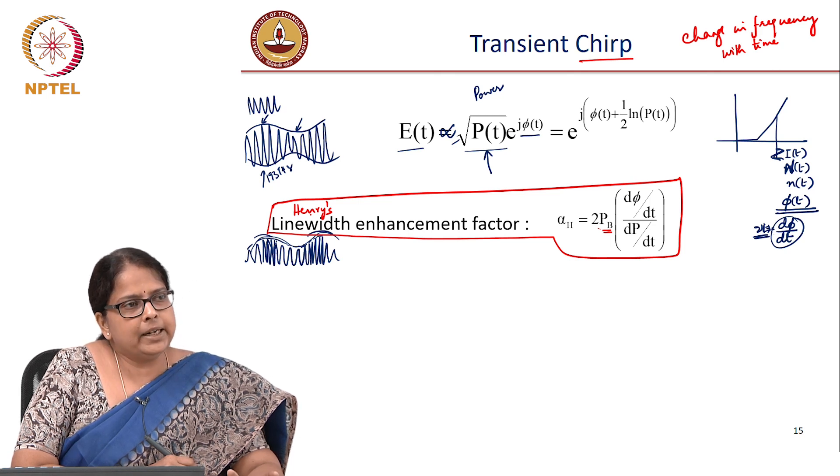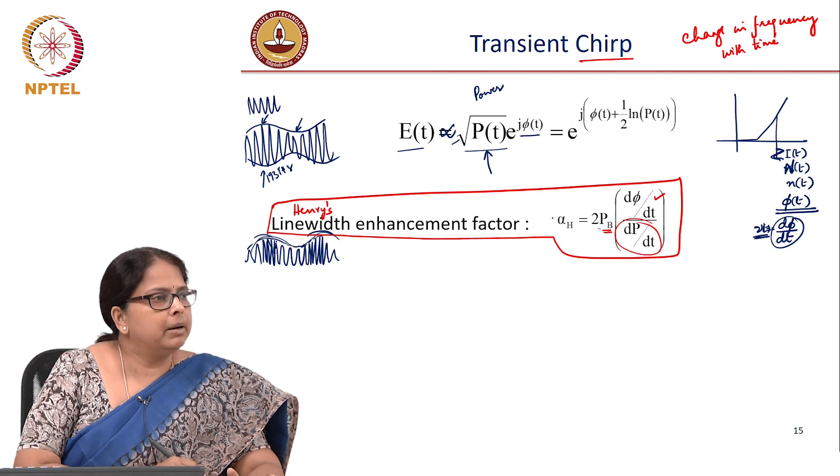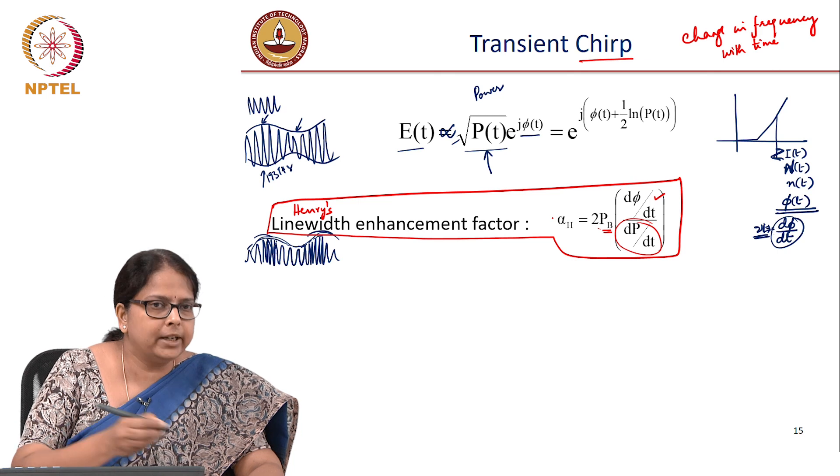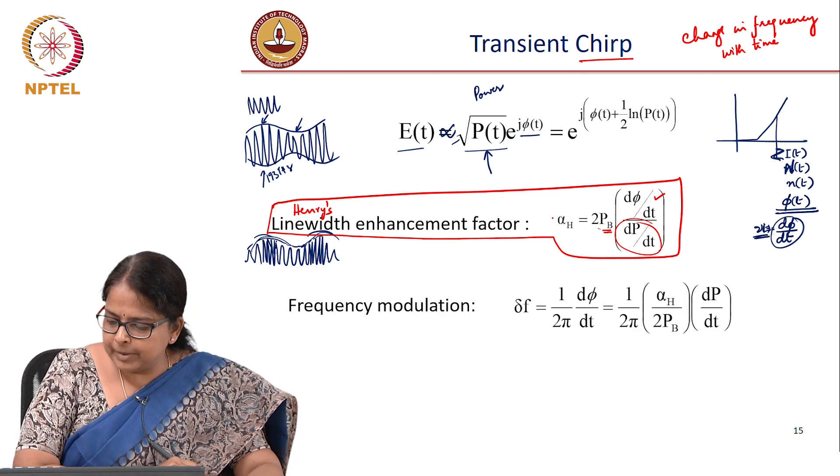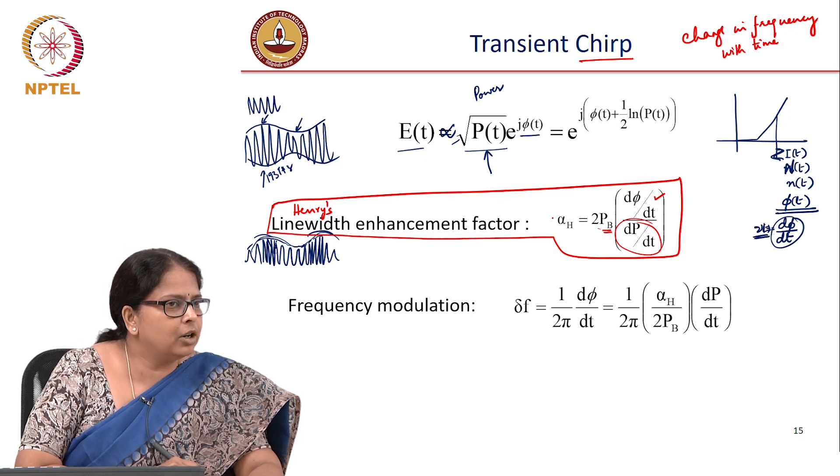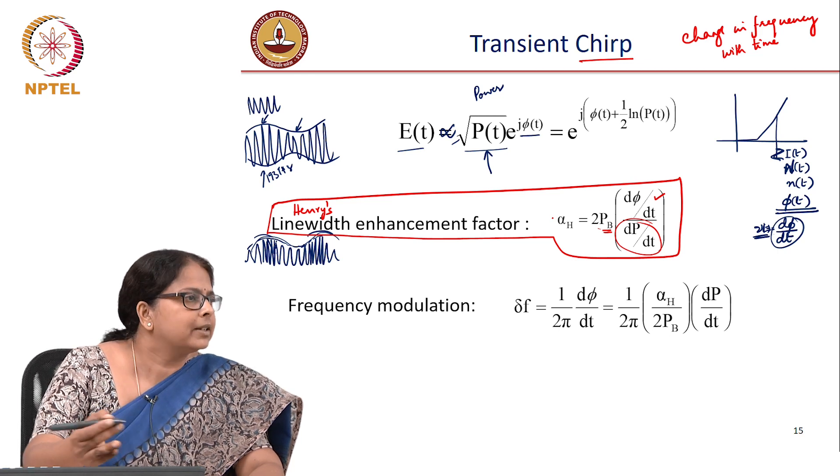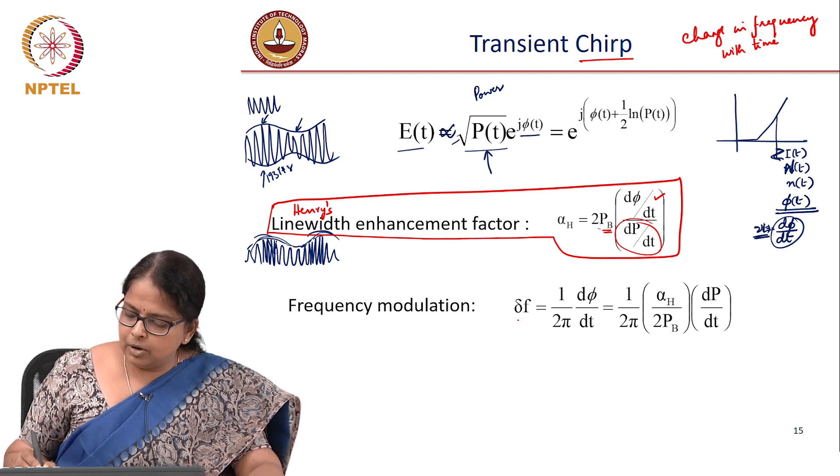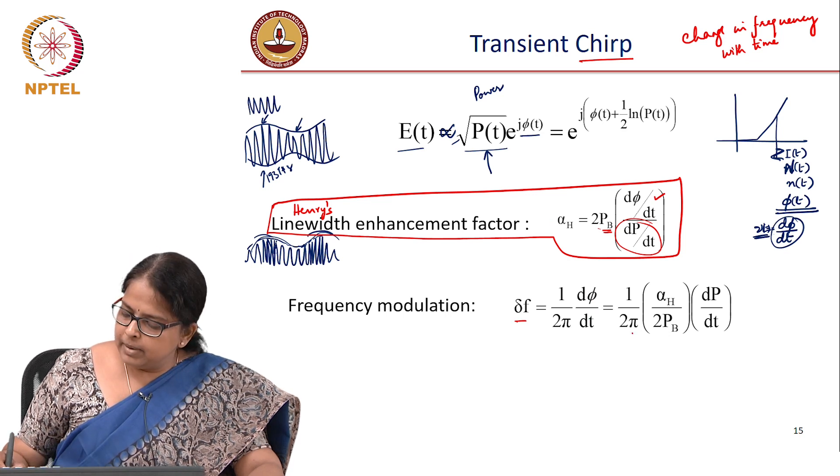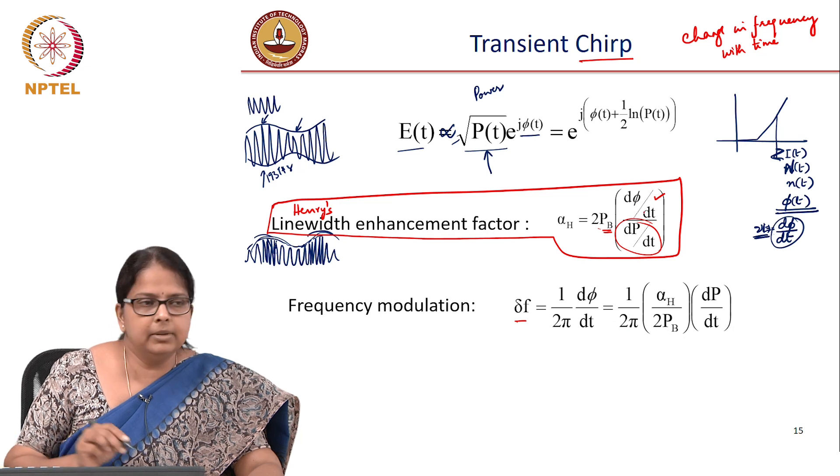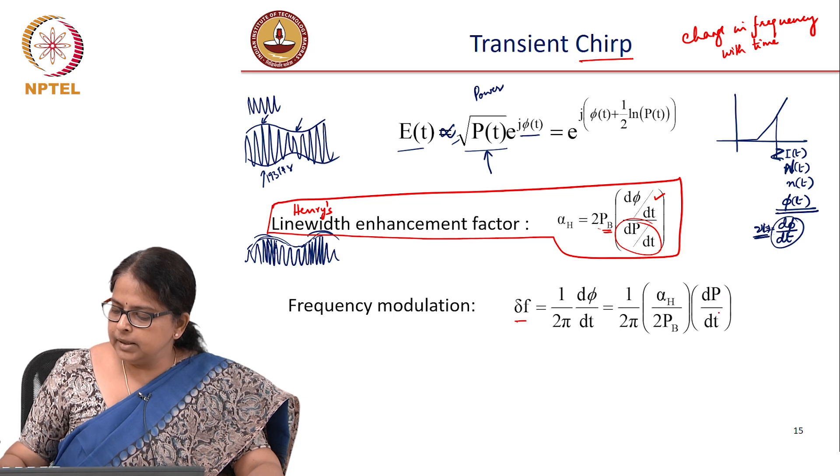And this is also called as alpha h, the h signifies Henry. Henry is one of the persons who first defined this, quantified this. So this is also called as Henry's line width enhancement factor. It will quickly help us to calculate how much is the phase modulation given that I am doing a power modulation this way. From that I can calculate frequency modulation because phase modulation is not what is measurable. What is measurable is I can put it on a spectrum analyzer and measure the frequency fluctuations. So frequency modulation is nothing but 1 by 2 pi d phi by dt. So 1 by 2 pi and d phi by dt from this is alpha h divided by 2 pb times dp by dt.